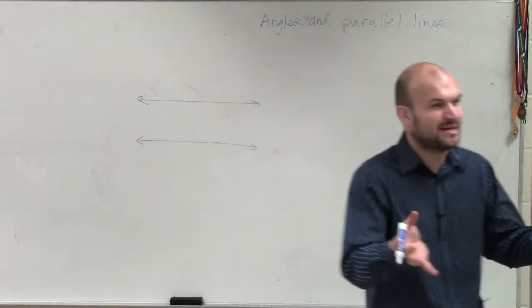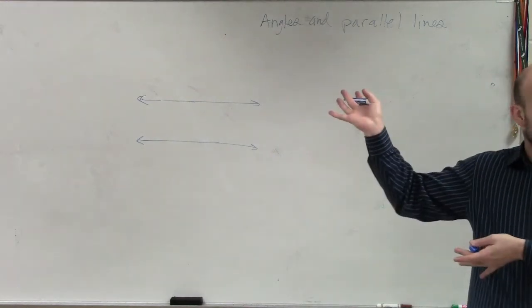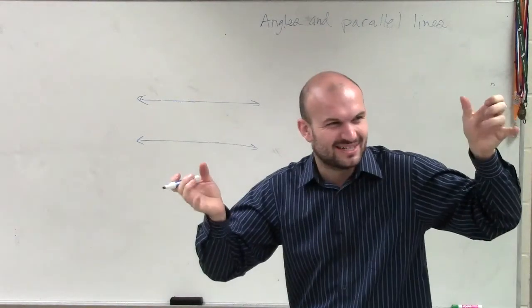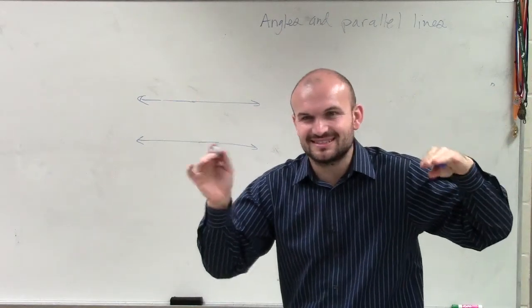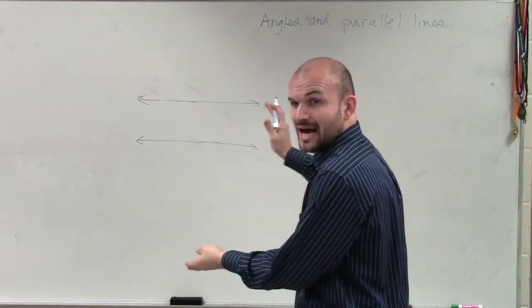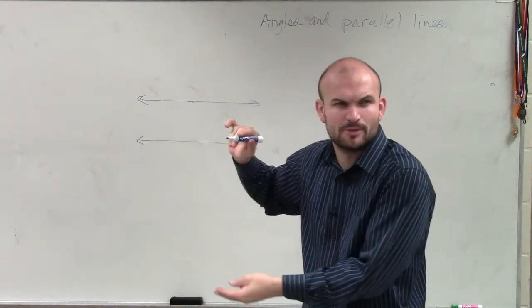And to know that they're parallel lines, we have to make sure they include what? When we're looking at drawing that parallel lines, we know they have to have those little, what do parallel lines have? Well yeah, when we write them out, they have the two lines. But if I actually draw the lines, how do we show that they're parallel?